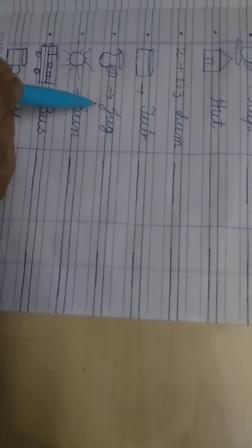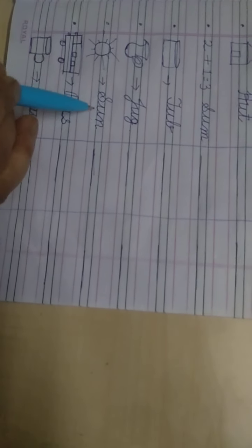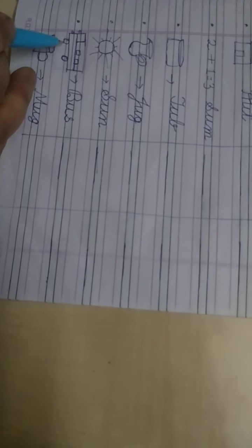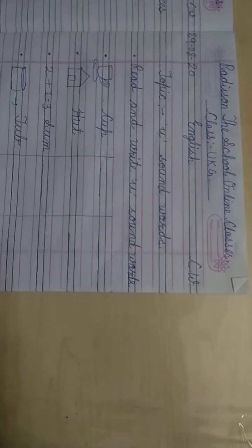What is this? Jug. J-U-G. Jug. Next, S-U-N. Sun. Next, B-U-S. Bus. Or, what is this? M-U-G. Mug. यह अच्छा से write करना है और याद भी करना है और two times आपको लिखना है.